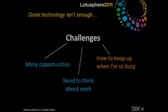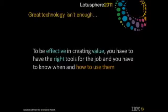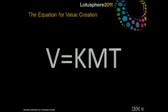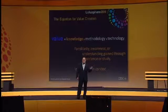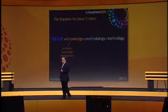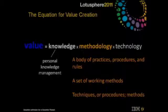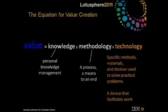With the challenges ahead of us, we're dealing with many opportunities and the need to think about the work you're doing and how to keep up. To be effective in creating value, you have to have the right tools for the job, know how and when to use them, and understand the outcome you're working toward. So here's the formula: V equals KMT. V stands for value. K stands for knowledge — that familiarity or awareness of how to do something, experience — information in context. M refers to methodology — those practices about how you approach your work. T refers to the specific methods, materials, and devices you use to solve problems.